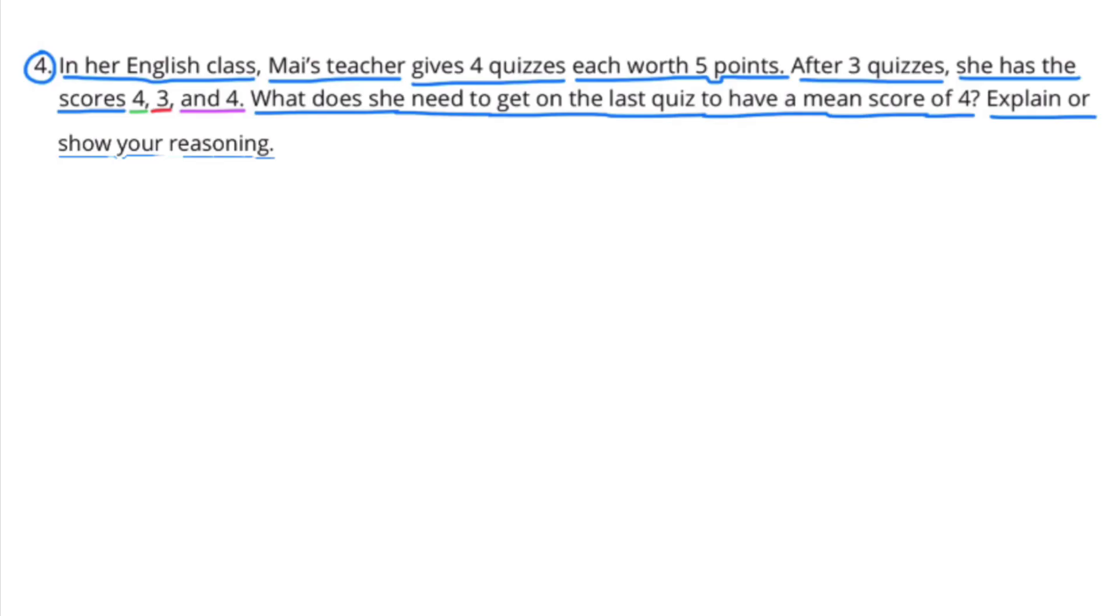Number 4. In her English class, Mai's teacher gives 4 quizzes, each worth 5 points. After 3 quizzes, she has the scores 4, 3, and 4. What does she need to get on her last quiz to have a mean score of 4? Explain or show your reasoning.